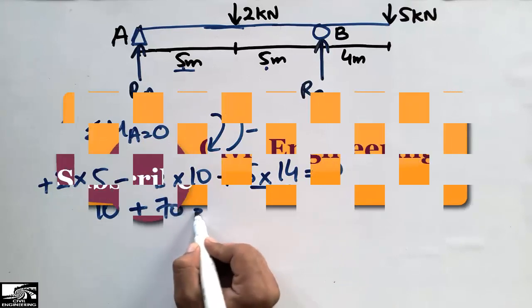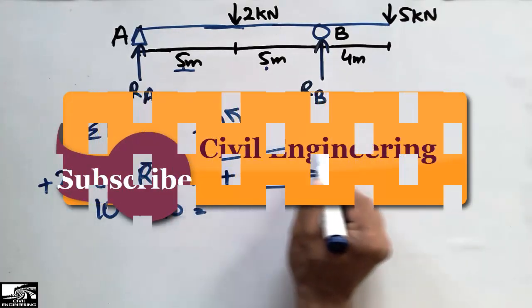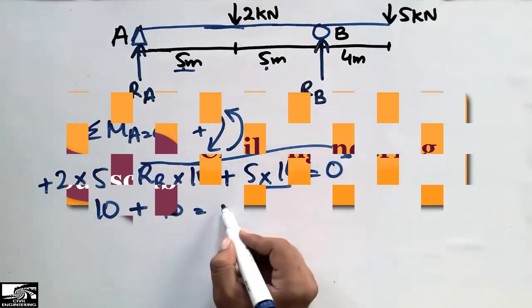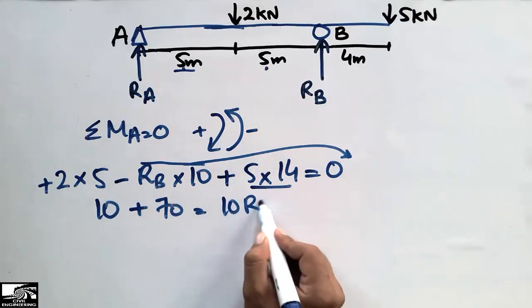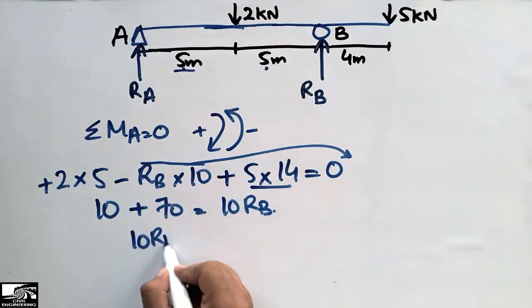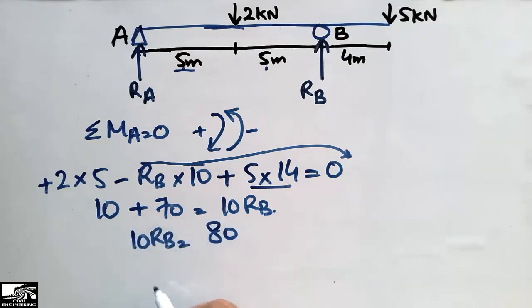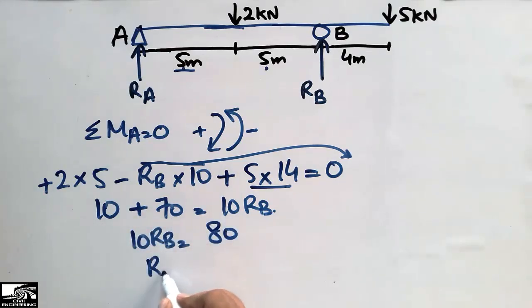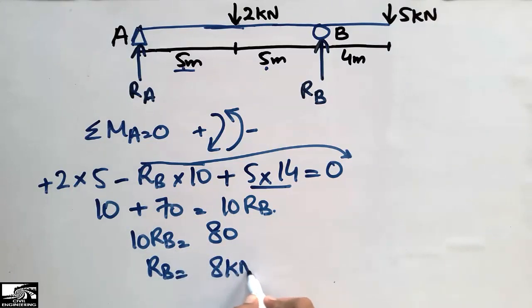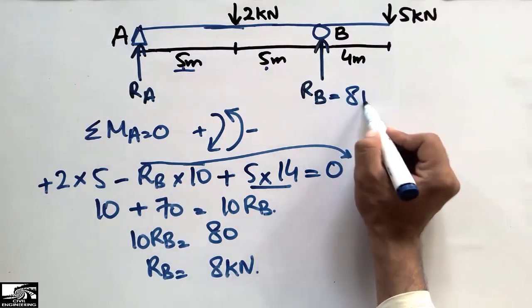Moving the RB term to the right side of the equation: 10·RB = 10 + 70 = 80. Therefore RB comes out to be 8 kN.